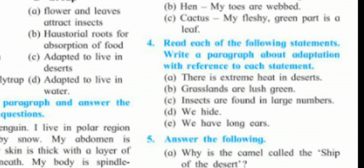Statement four: some animals hide to save their life from predators. To survive in their surroundings, some animals use hiding as an adaptation. Statement five: some animals have long ears — generally herbivores — and these long ears help them stay safe from predators. If a carnivorous predator comes near, the long ears detect the hint and the animal can run away quickly with its strong legs.